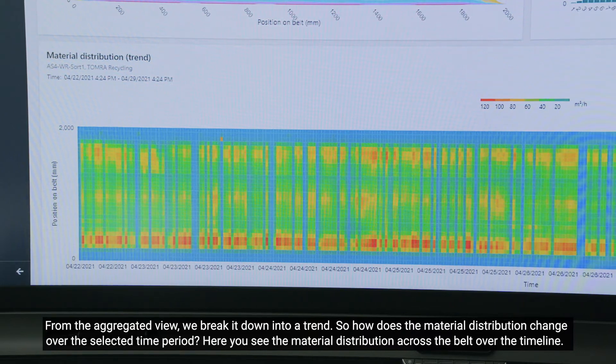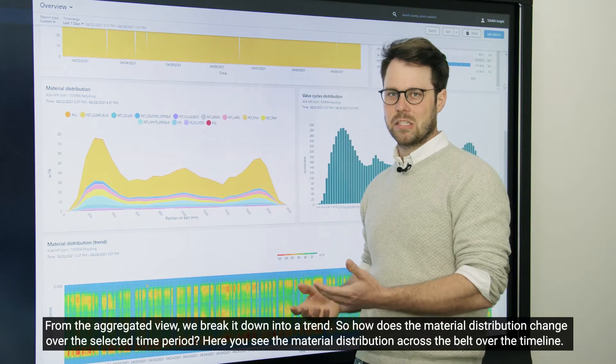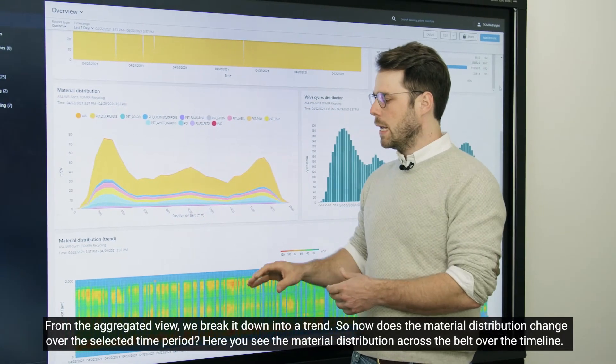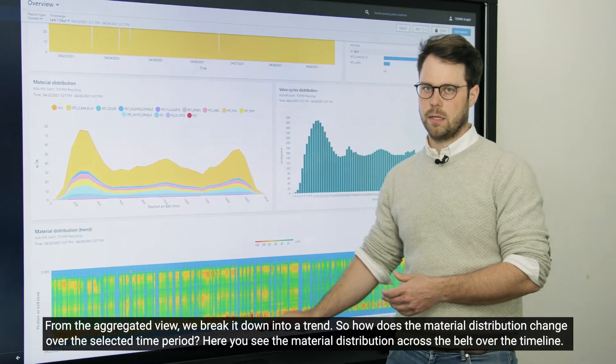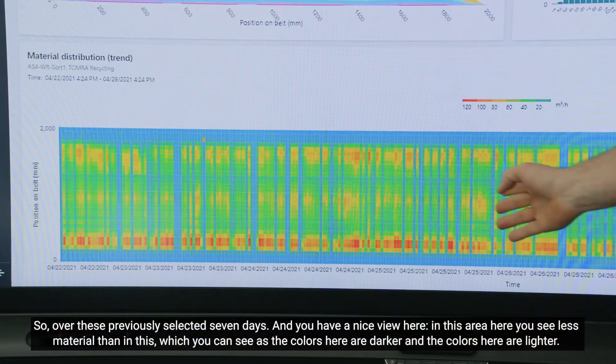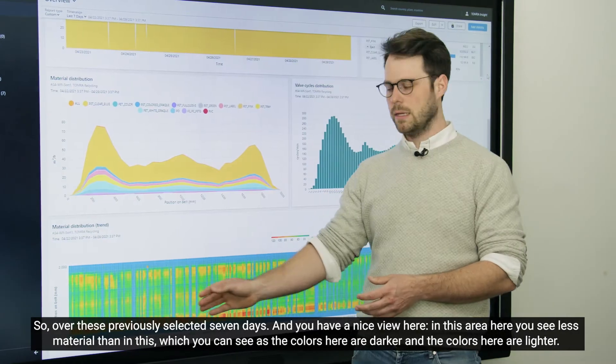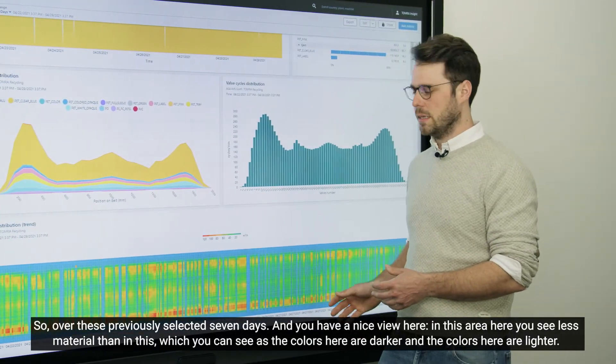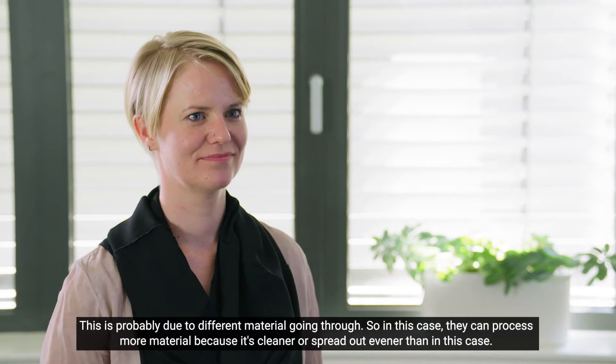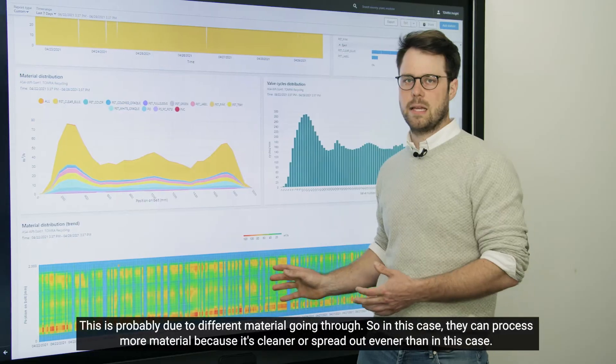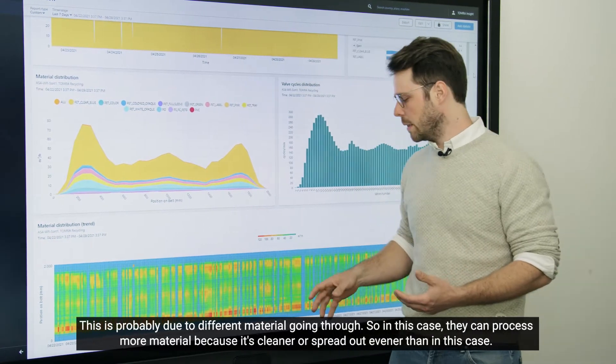From the aggregated view, we break it down into a trend. So how does the material distribution change over the selected time period? And here you see the material distribution across the belt over the timeline, over these previously selected seven days. You have a nice view here that in this area you see less material than in this. You can see that the colors here are darker and the colors here are lighter. This is probably due to different material going through. In this case, they can process more material because it's cleaner or spread out more evenly.